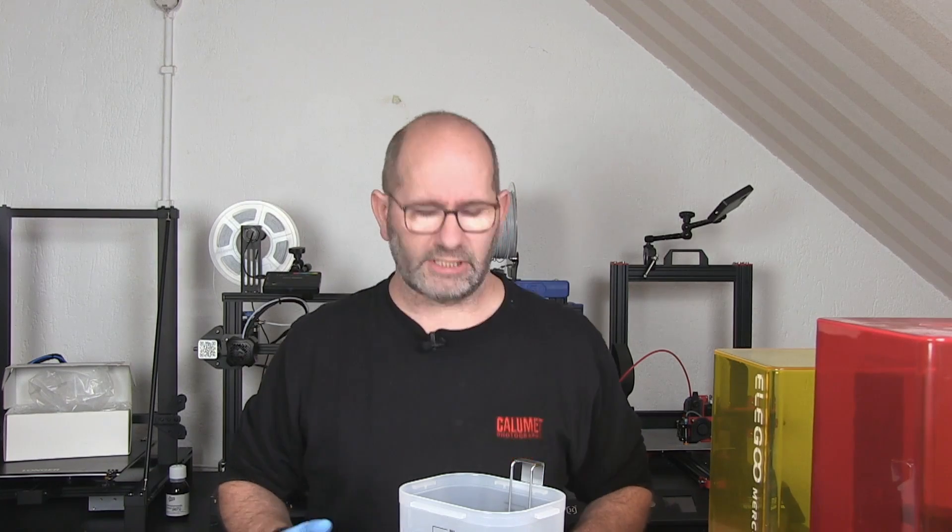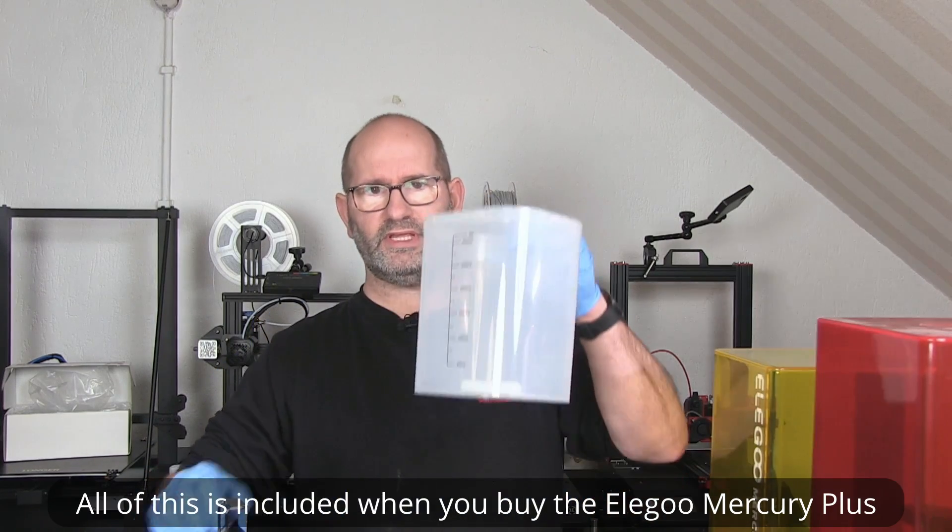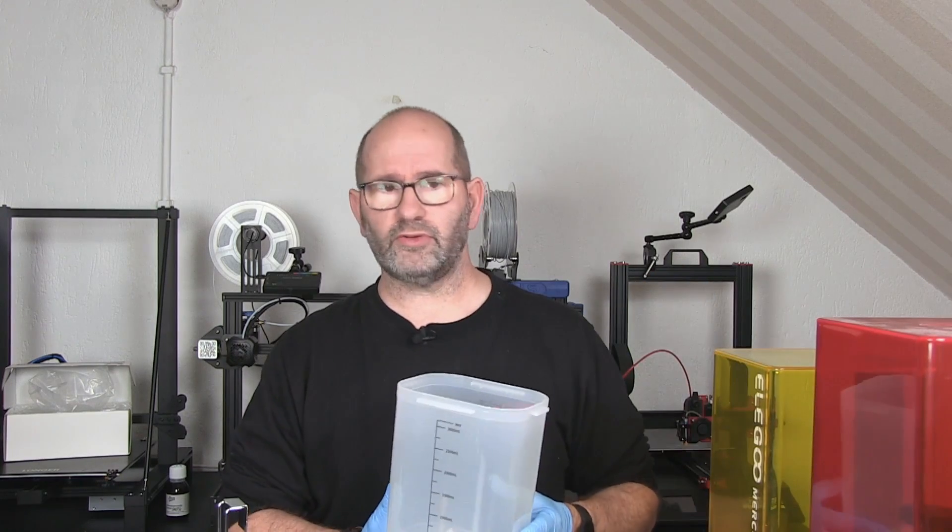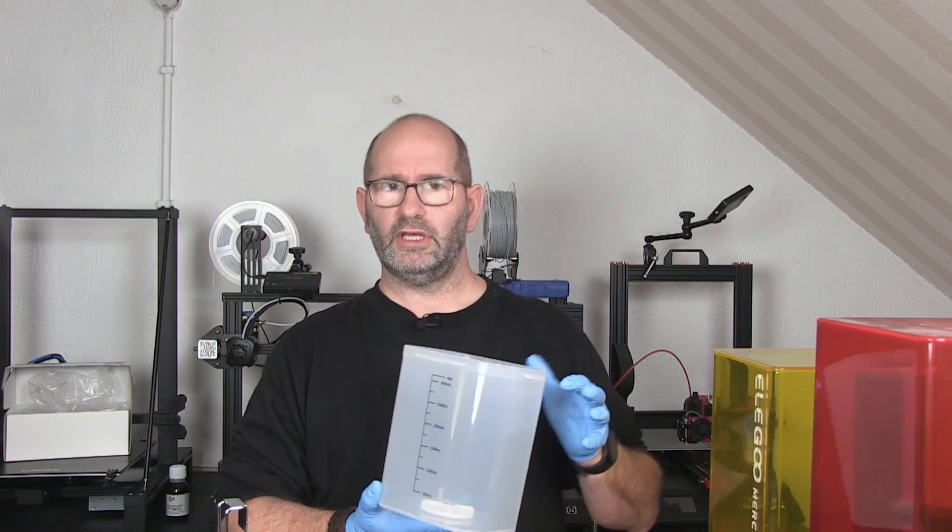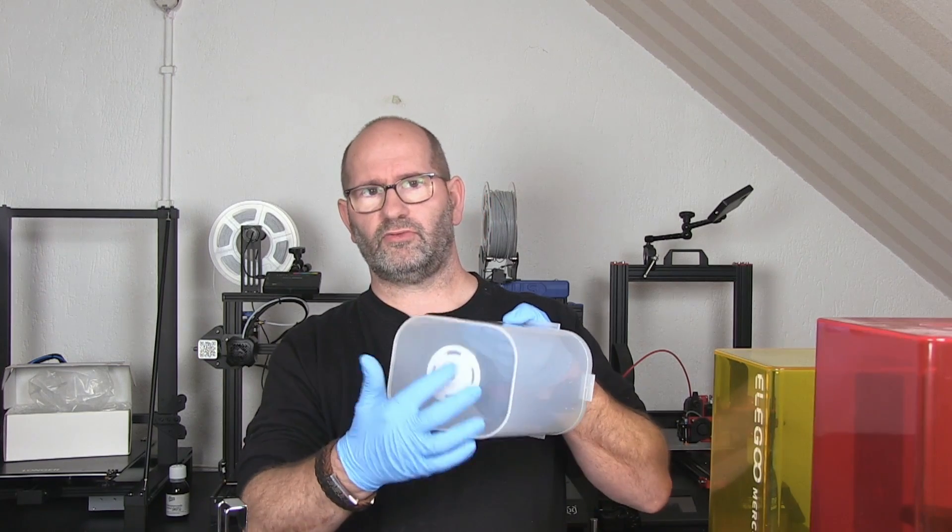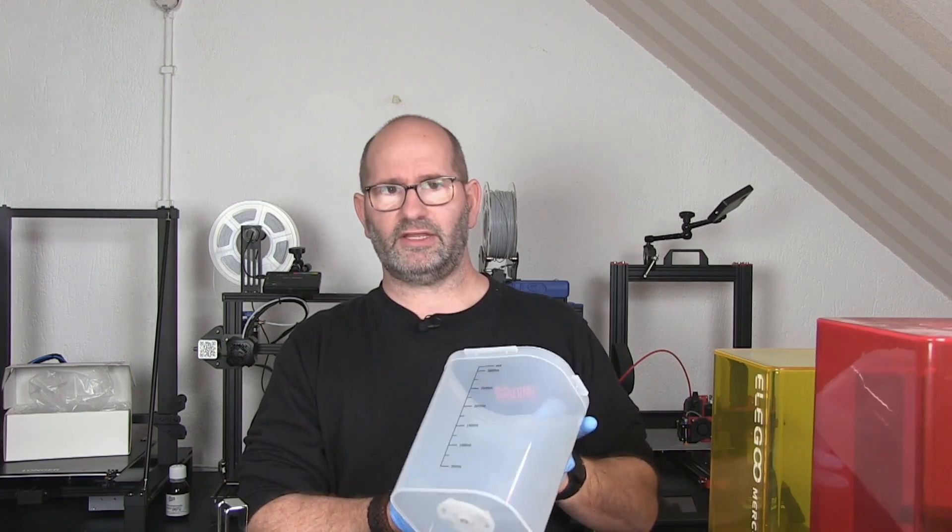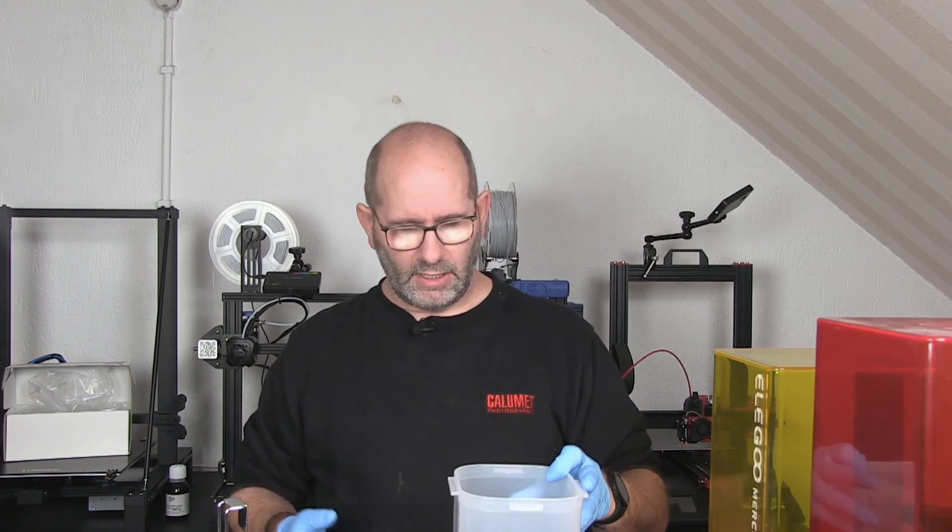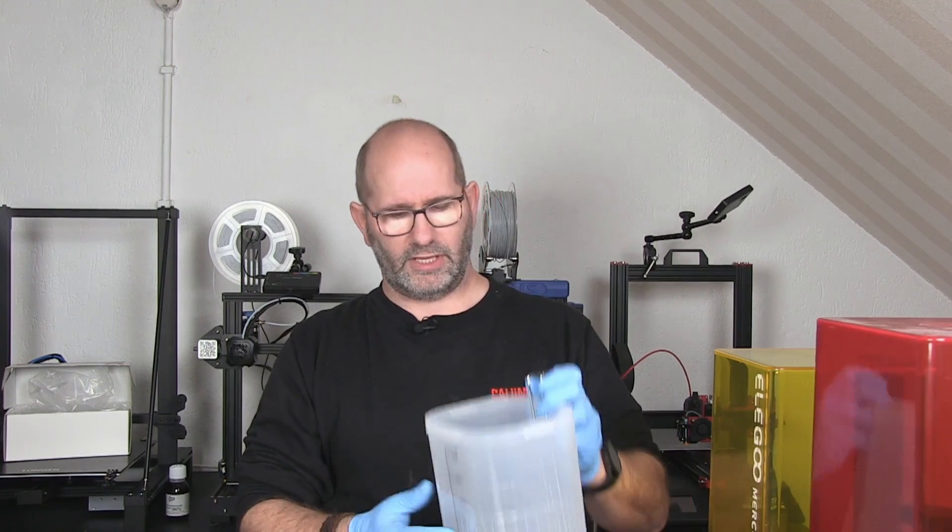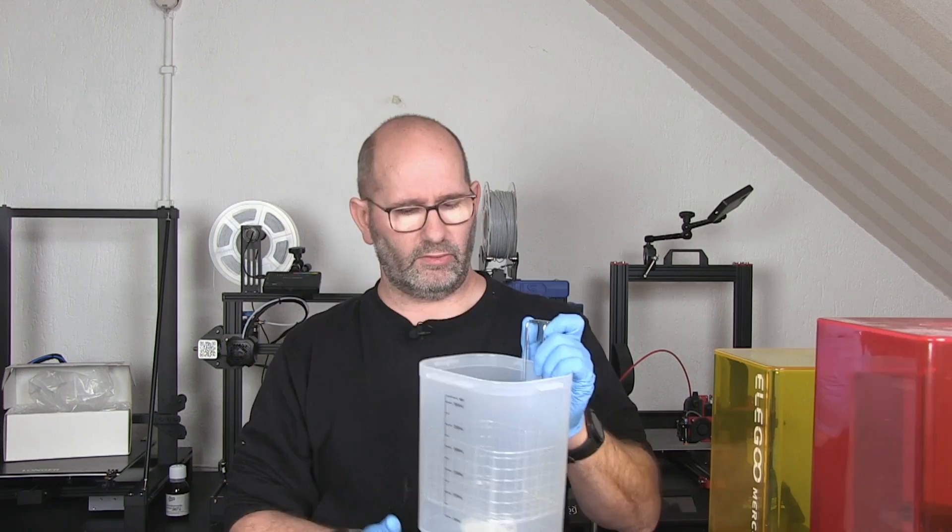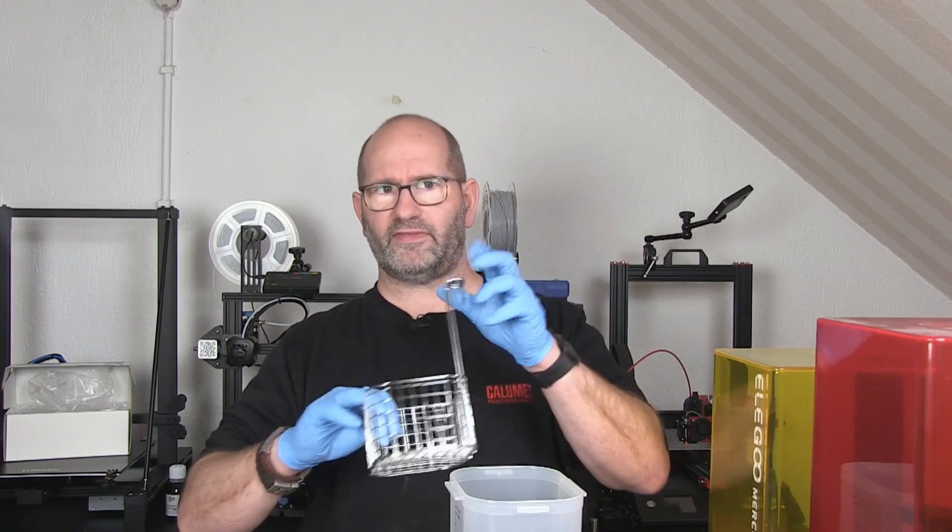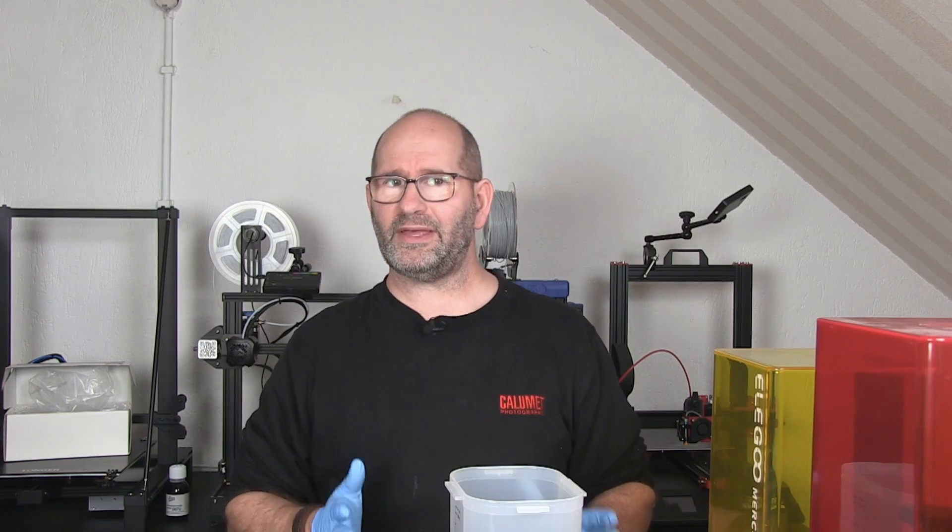With the curing station there also came a few goodies. First, this is a special container in which you can pour alcohol or water depending on what kind of solution you're using to clean your prints, whether it's water washable or alcohol washable. It has this strange bottom which is a magnet and it stirs the fluid inside the container when you're using it. In that container you can put this basket, which makes sure that your parts don't fall on the steering motor.